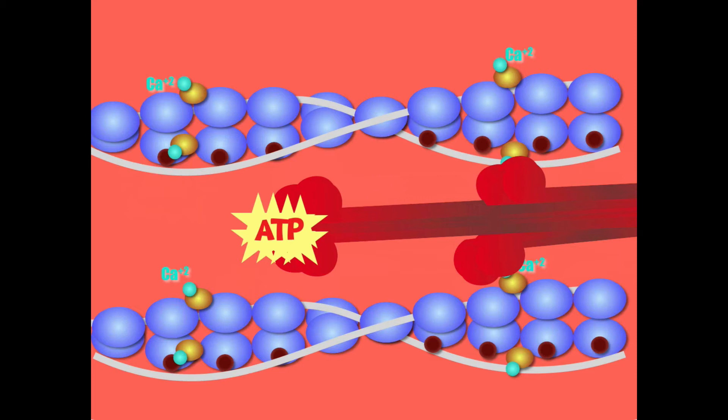Their muscles are in a contracted phase and the reason they're in a contracted phase is because they've run out of ATP. ATP actually allows the muscles to relax.